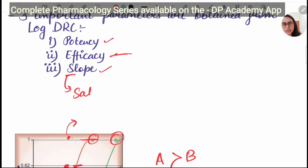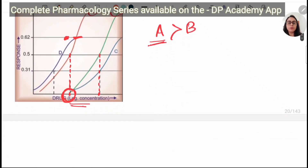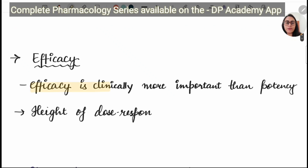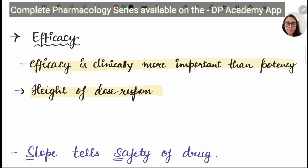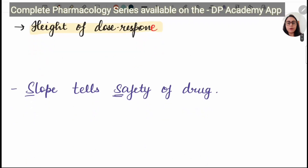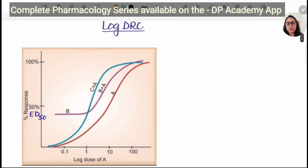Remember: S for slope, S for safety. Slope tells about the safety of a drug. If the slope is steeper, the drug is less safe — a sudden rise in slope signifies toxicity. Clinical efficacy is more important than potency, and it tells about the height of the dose-response curve. Right and left tells potency; higher and lower tells efficacy; and slope tells about the safety of a drug. More slope means the drug is less safe and more toxic.